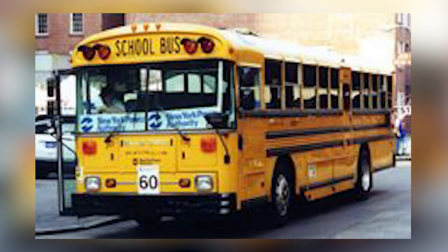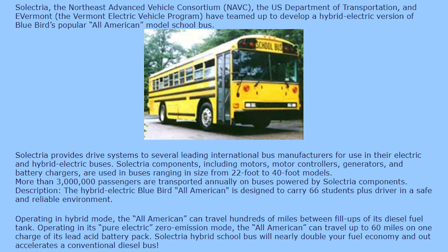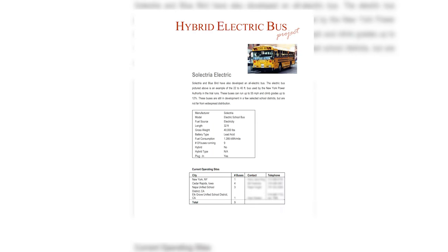The second type of TC EV was made by Selectria, with no involvement from Westinghouse. The timeline on these buses is a little later. The first archive was from January 24, 2005, noting that agencies in New York City played a part in the creation of this bus. A document from the Hybrid Electric Bus Project dated March 6, 2003 states the bus was tested not just in New York City but all across the country — four in Cedar Rapids, Iowa; three in Napa USD; and one in Elk Grove USD, both in California.